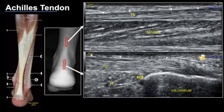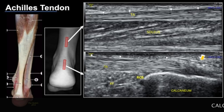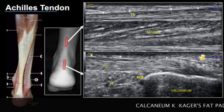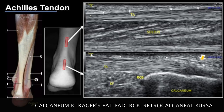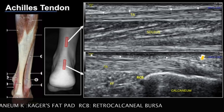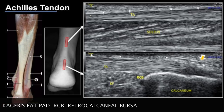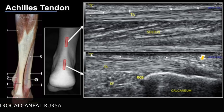On cross-section in the peri-insertional fibers of the Achilles tendon we see a number of structures: the peri-insertional fibers of the Achilles tendon, the retrocalcaneal bursa located between the tendon and the calcaneum, the Kager's fat pad, and a potential bursa between the tendon and the subcutaneous fat, also known as the pre-Achilles bursa.